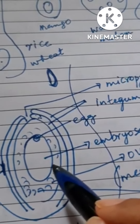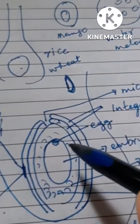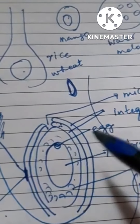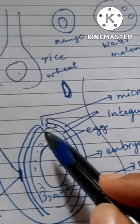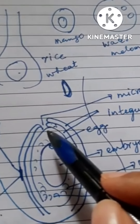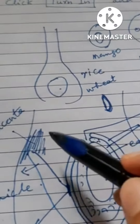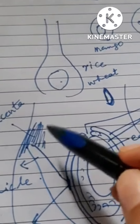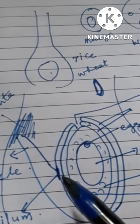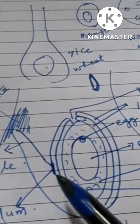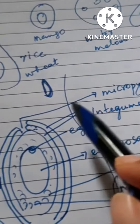So the ovule consists of an embryo sac inside, with integuments covering it — except at a point called the micropyle. It has a stalk called the funicle, attached to the placenta of the ovary. The spot where the funicle attaches to the ovule is called the hilum.